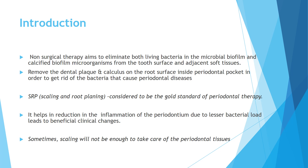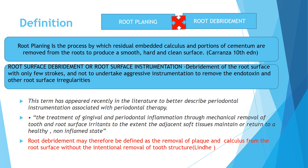Sometimes scaling alone will not be enough to take care of the periodontal tissues. Coming to the definition of root planing: it is a process by which residual embedded calculus and portions of cementum are removed from the roots to produce a smooth, hard, and clean surface. Previously the term curettage was used, then it changed to root planing, and later it has been changed to root surface debridement.